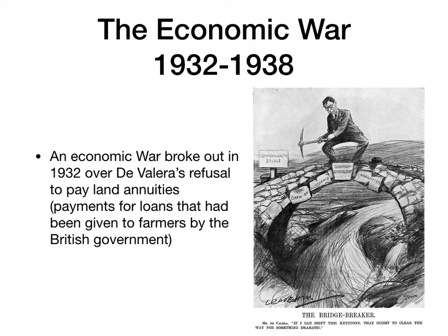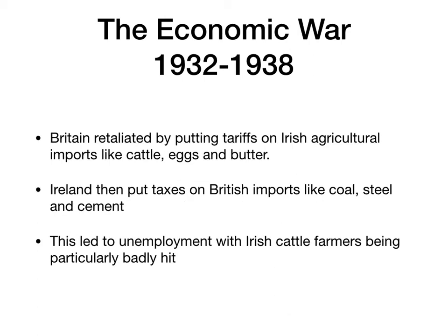There was a big economic war that took place between Ireland and England between 1932 and 1938. The economic war broke out over de Valera's refusal to pay land annuities — payments for loans that had been given to farmers by the British government. De Valera said he was not going to pay them back anymore. Britain retaliated by putting tariffs on Irish agricultural imports like cattle, eggs and butter. Ireland then responded by putting taxes on British imports like coal, steel and cement.